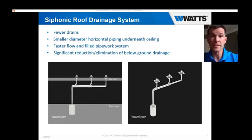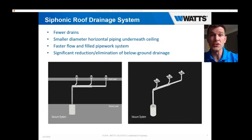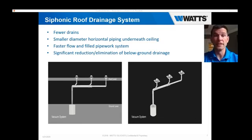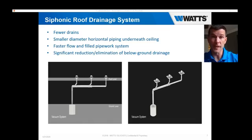Comparing a gravity system to a siphonic system: there are fewer roof drains needed. You're using 100% of the pipe volume compared to a third in gravity, so you don't need as many roof drains to install. You can also use smaller pipe diameters for the horizontal piping underneath. The negative pressure increases flow for a faster, filled pipe system, which is quick due to that low-profile baffle design. This reduces ponding and leads to a significant reduction in potential below-ground drainage — if any — allowing you to run horizontal pipes through the building over to a Watts Rain Cycle harvesting system or divert them to areas more convenient for disposal.